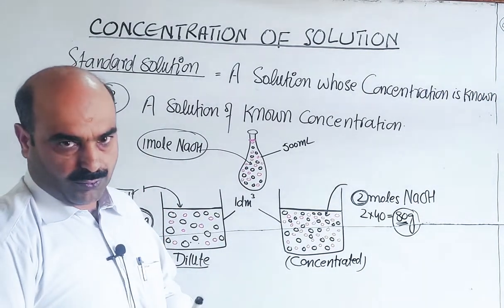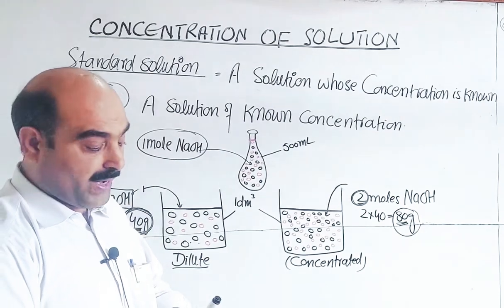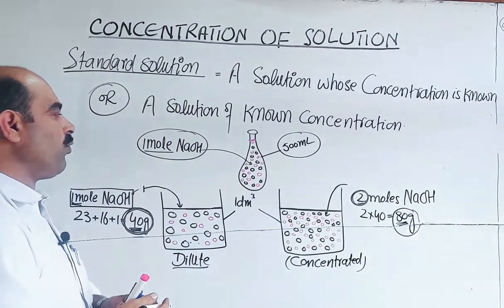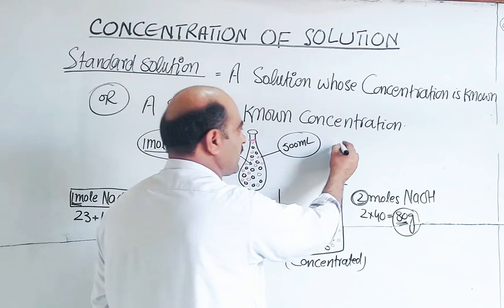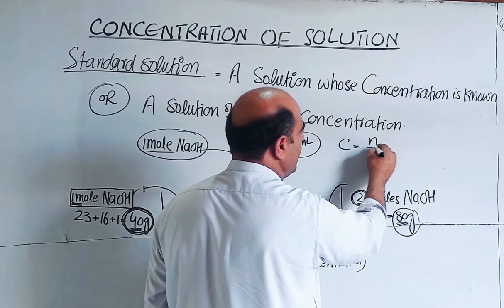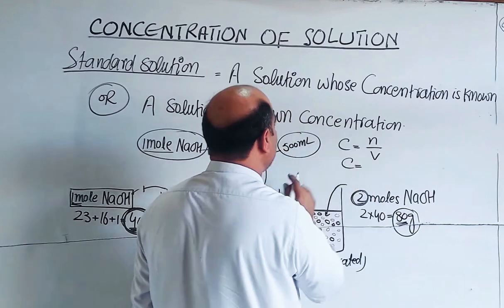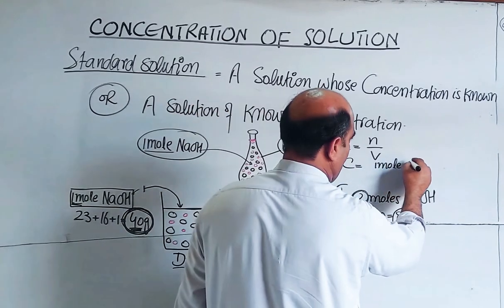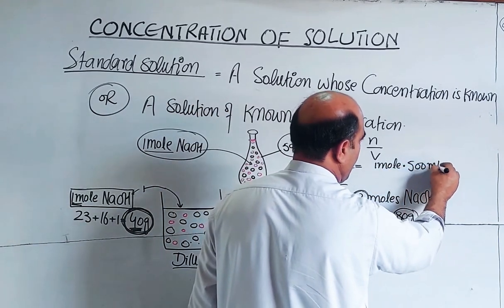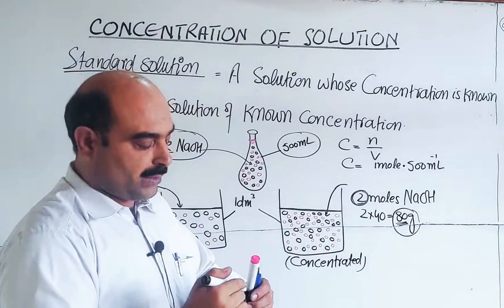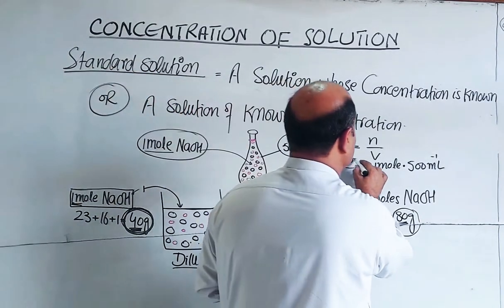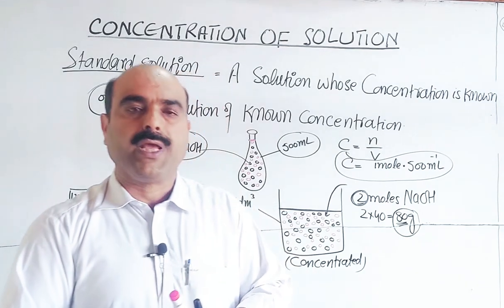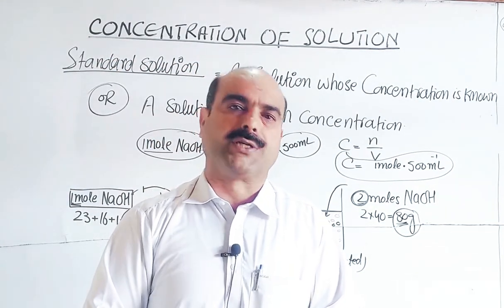This is called a standard solution because the total volume is known — 500 ml — and the amount of solute dissolved is also known — one mole. So the concentration can be calculated: C = n/V = 1 mol / 500 ml. The volume of the solution is known and the number of moles of solute is known.